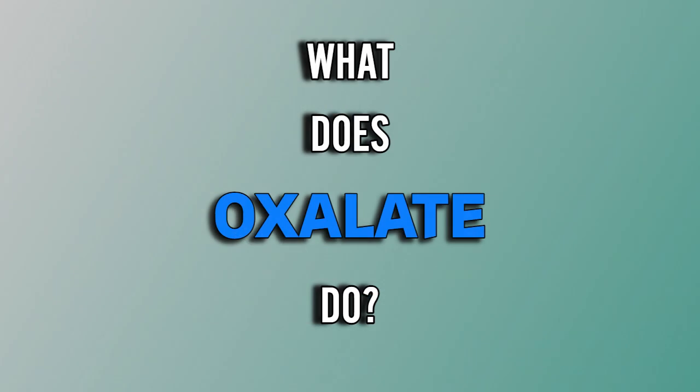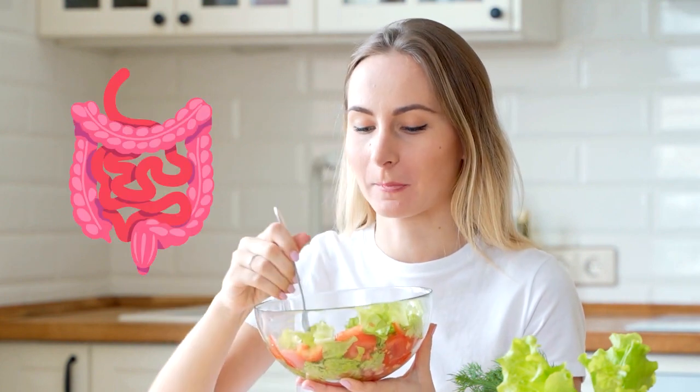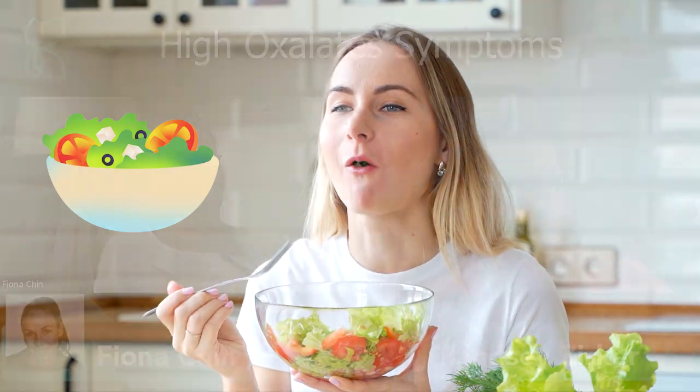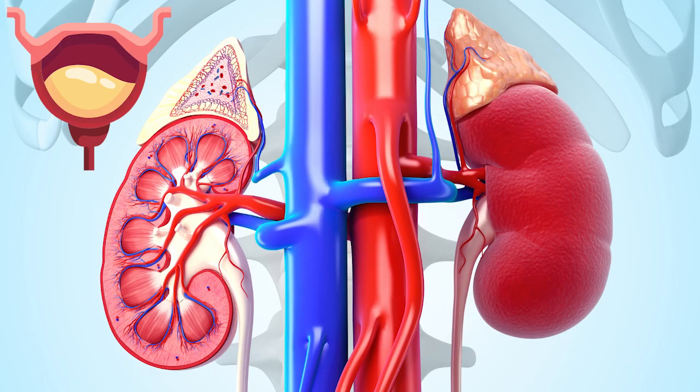Oxalates are considered an anti-nutrient because they're really for plants and not for humans. When you eat a plant that has oxalates in it, the food is broken down in the gut and oxalates are released from the plants. In the gut, some oxalates might bind with certain minerals like calcium, and those bound oxalates won't be absorbed well — they'll pass out through the stool. But free oxalates are absorbed and then removed through the kidneys via urine.